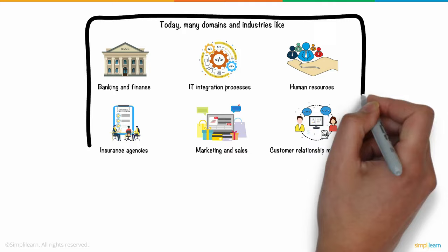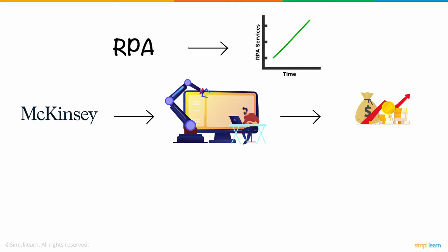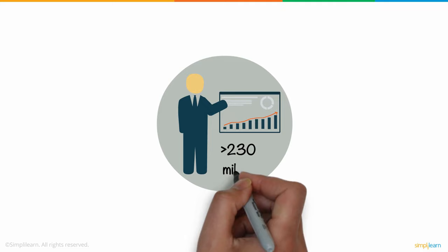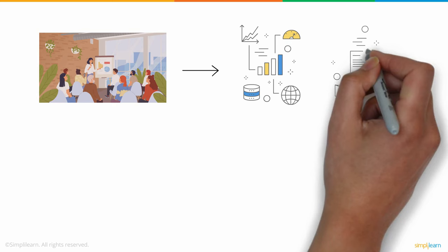RPA service adoption has been showing tremendous growth since 2016 and will continue to increase beyond 2020. According to McKinsey's research, knowledge and work automation could have an economic impact of $5 to $7 trillion by the year 2025. It will impact more than 230 million knowledge workers, which constitute 9% of the global workforce. Any company which is labor-intensive, where people are performing high-volume, high-transaction functions, stands to benefit the most with RPA adoption, boosting their capabilities and saving money and time.